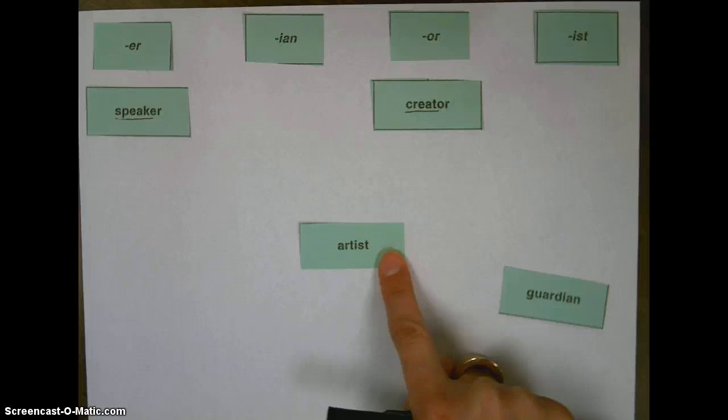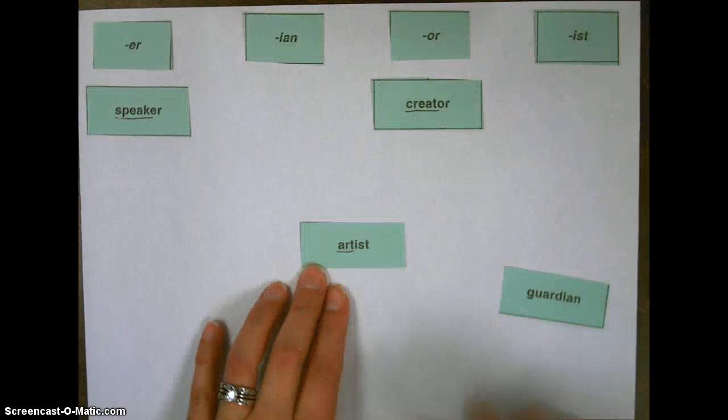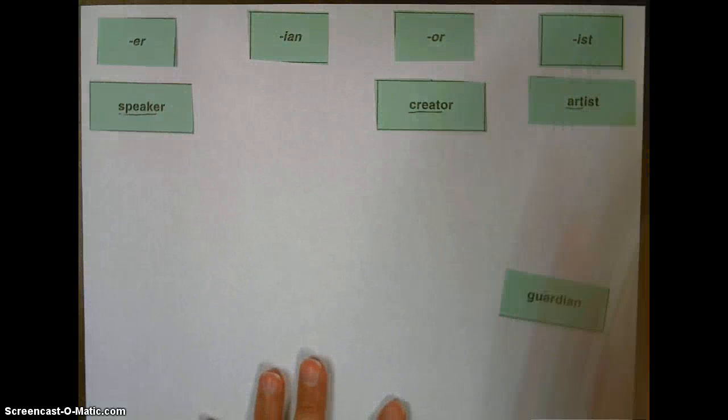Next, we have the word artist. The base word there is art, and adding that ist changes it to someone who does art.